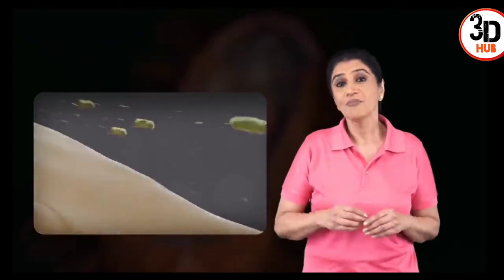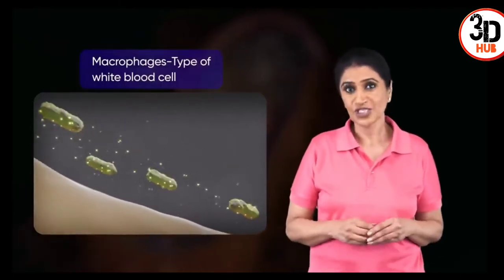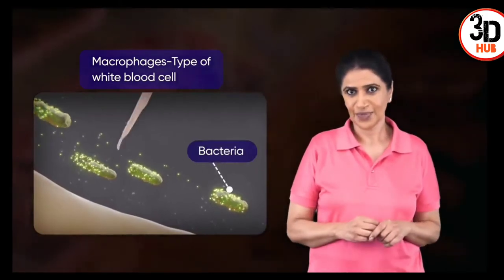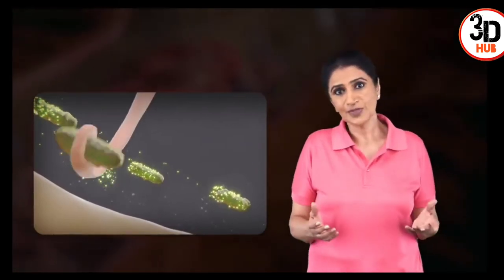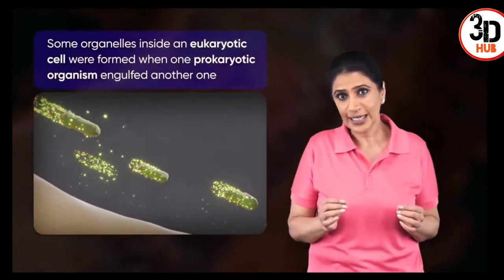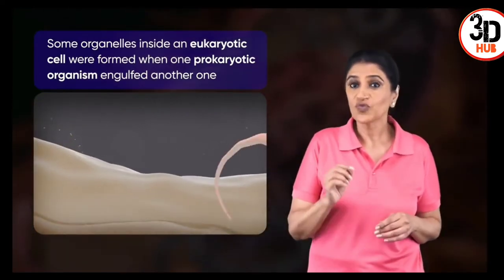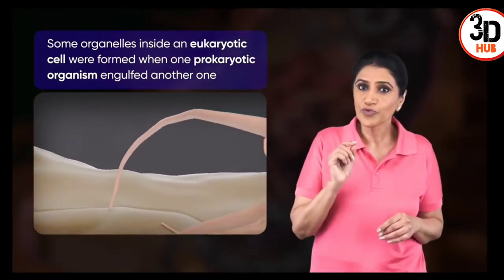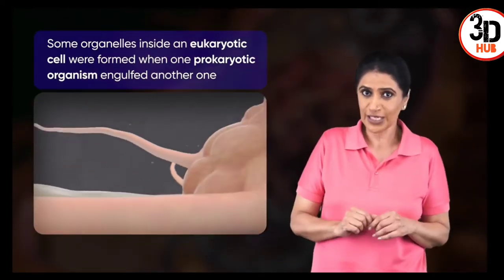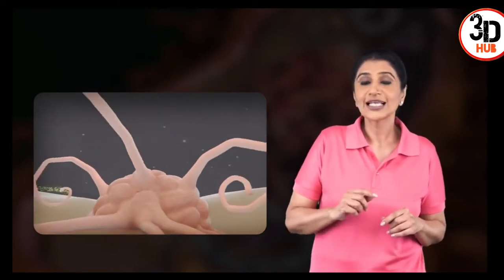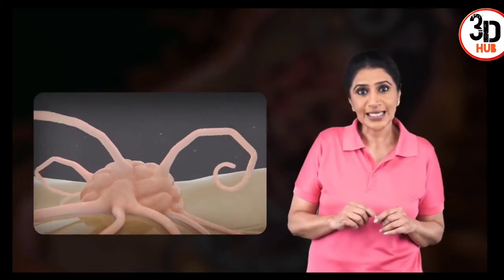You are what you eat — macrophages, for example, eat dangerous bacteria. Scientists believe that some organelles inside a eukaryotic cell were formed when one prokaryotic organism engulfed another, then it lived inside and became the functioning structure of its host, forming a eukaryotic cell.